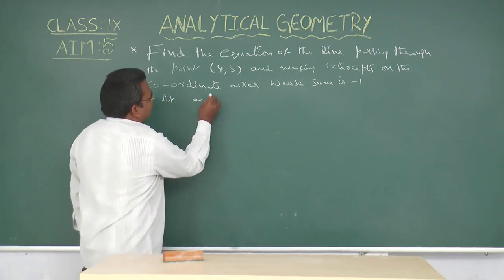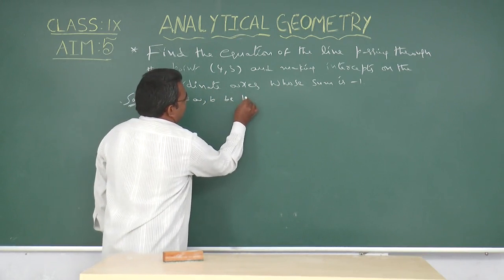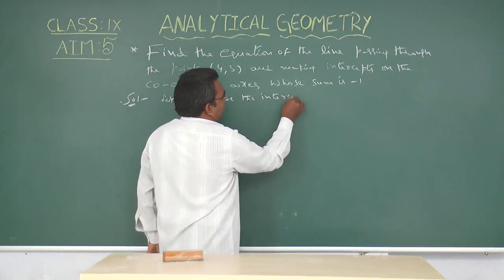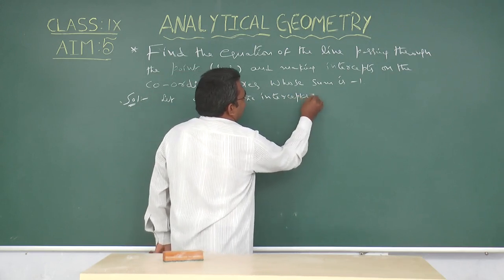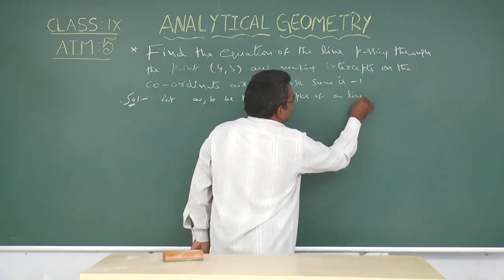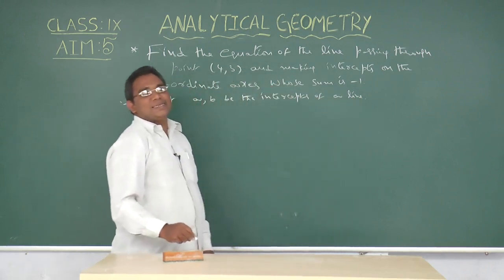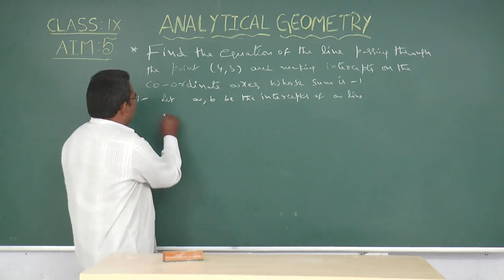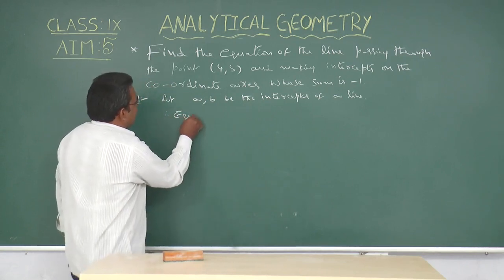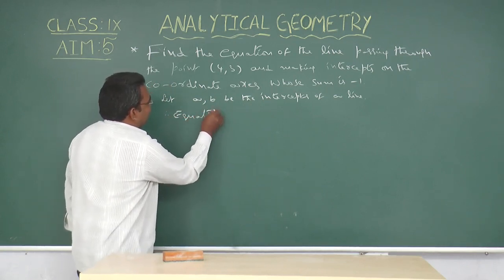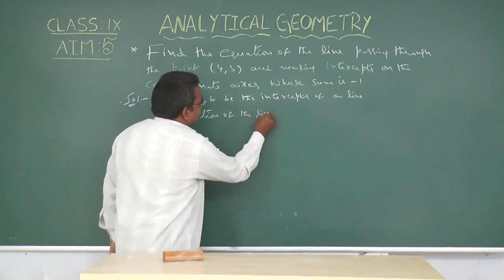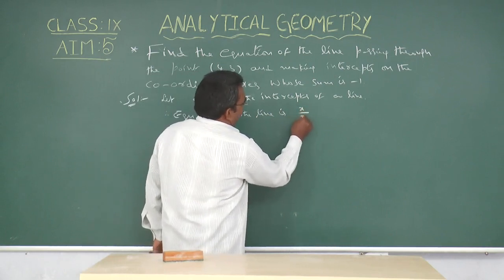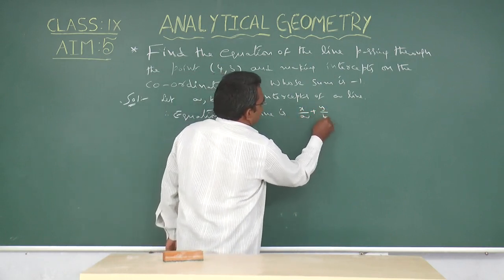Let small a, small b be the intercepts of a line. That means, small a is the x-intercept and small b is the y-intercept. Therefore, the equation of the line is x/a + y/b = 1.